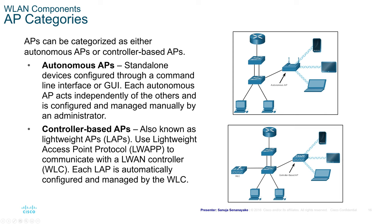The advantage of controller-based APs compared to autonomous APs is centralized management of your wireless system. You can have multiple controller-based APs controlled by a single WLC, giving you more control over all those devices. With autonomous APs, each device must be configured individually, which can be problematic if you have many wireless APs across your network.